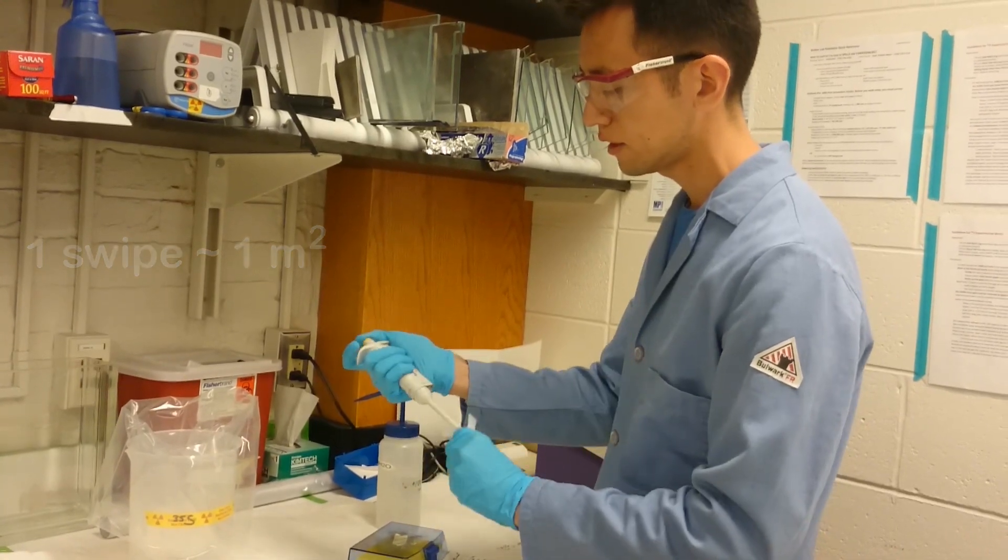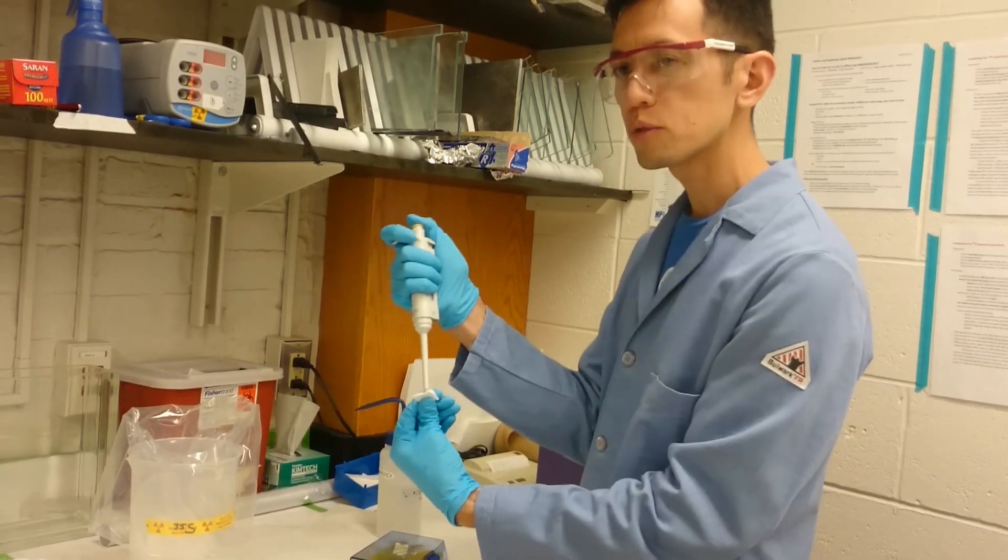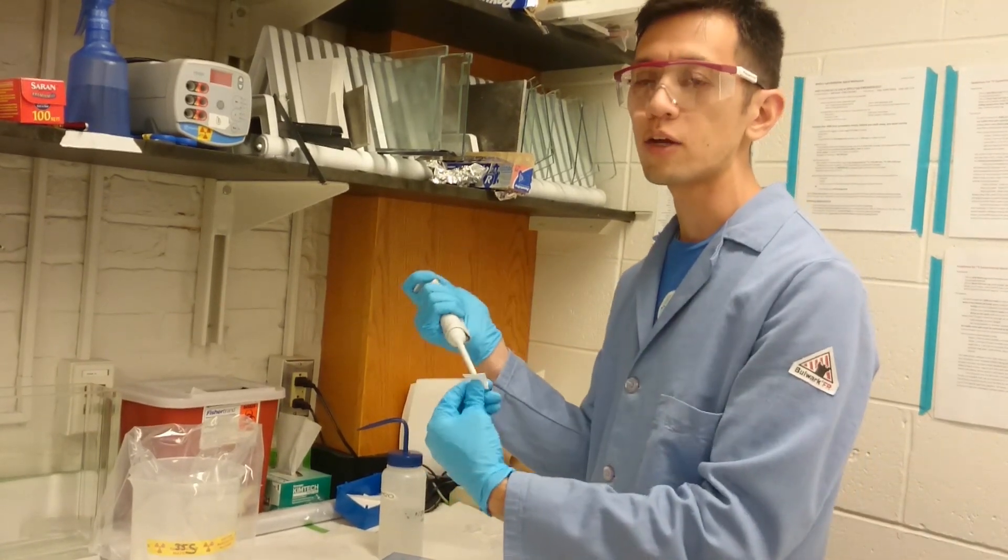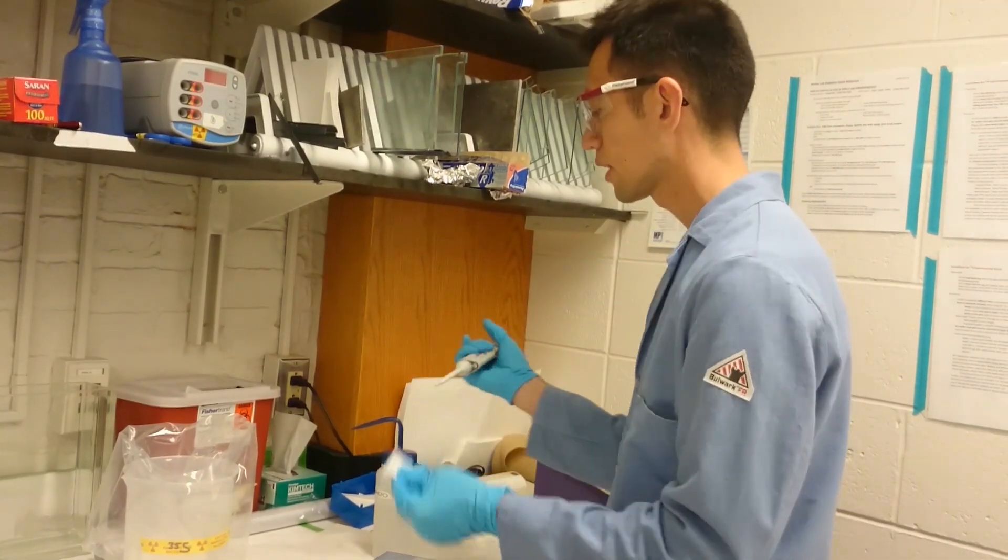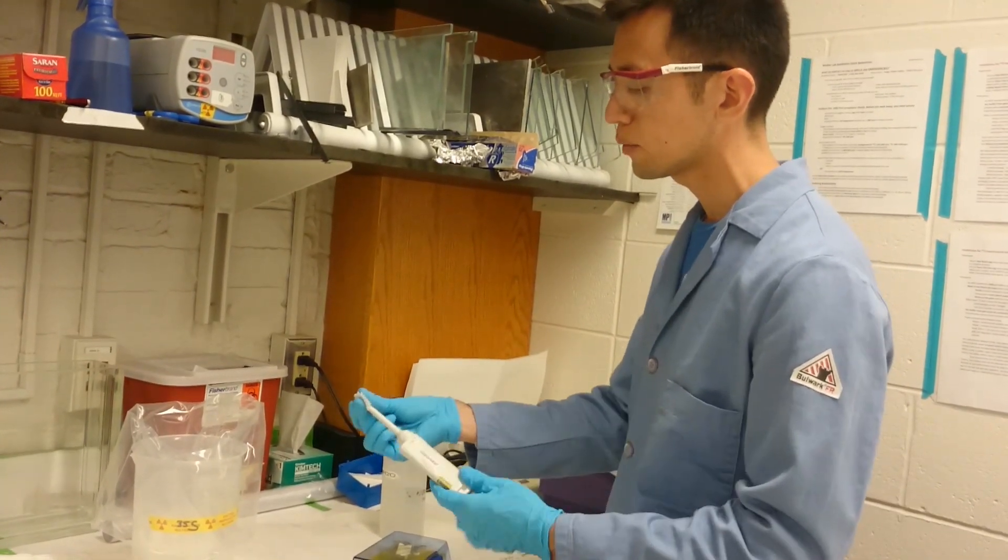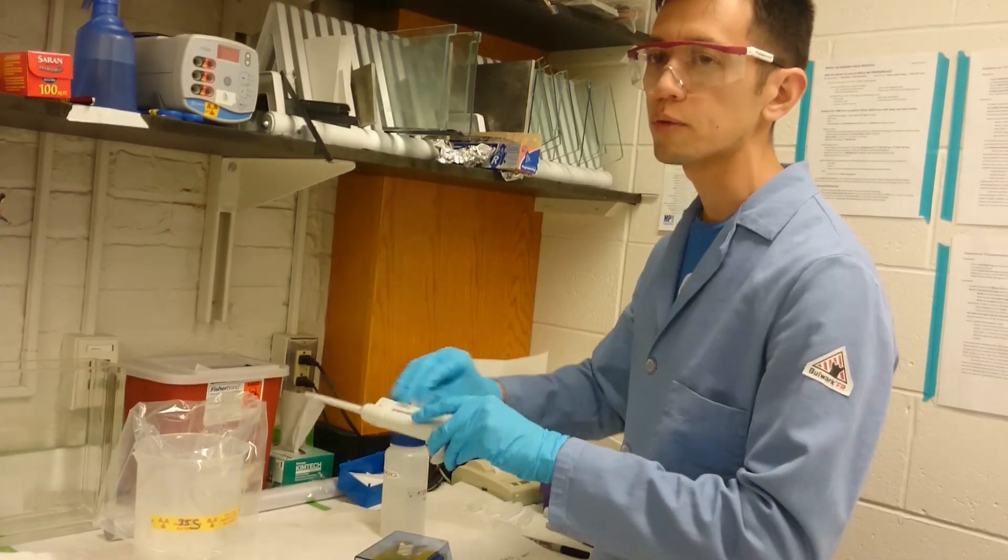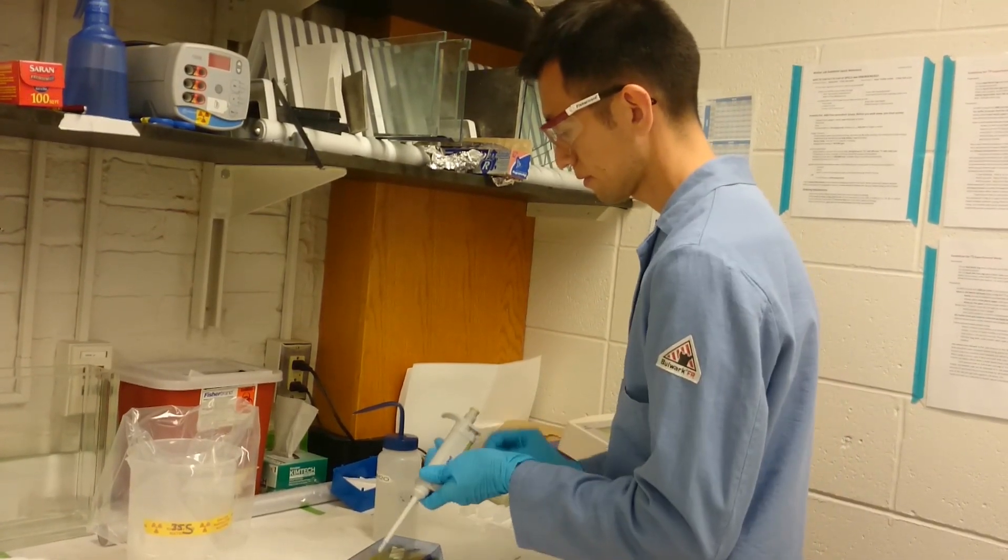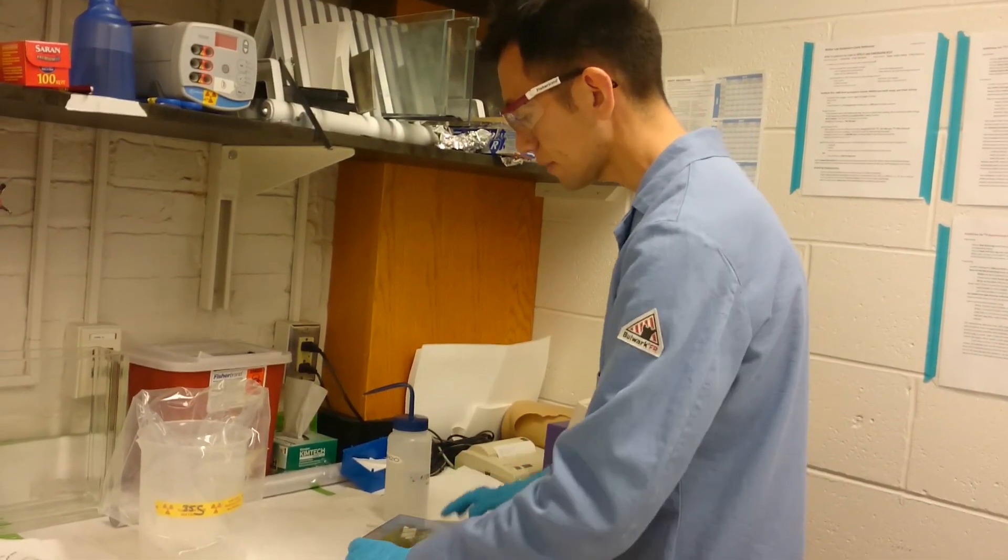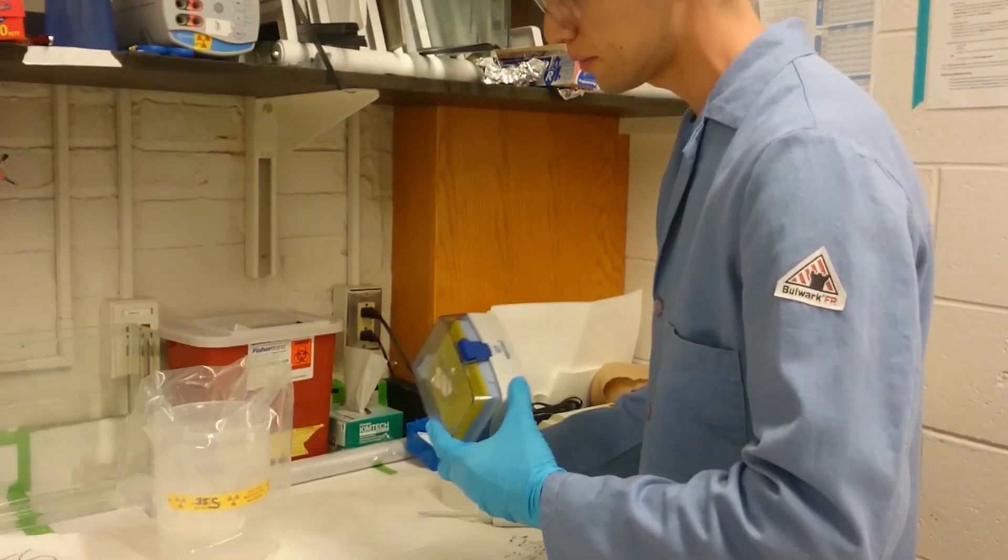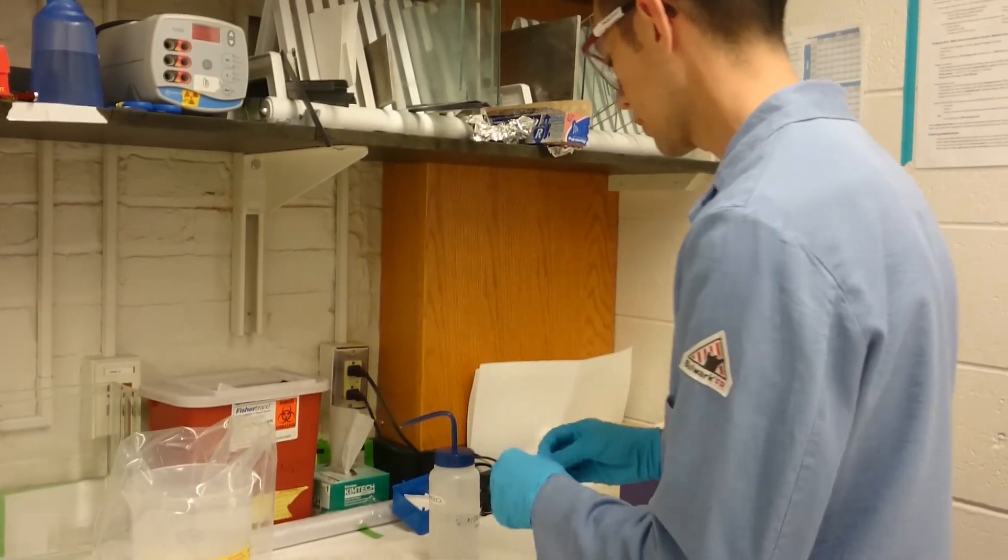It's also important to pump it up and down just in case there's anything inside the barrel. It'll get spit out onto the paper and then you'll know. So I did that onto the front side. Now I'm going to use the opposite side of the paper to swipe the rest of my pipettor. Put that down and also swipe the box - the top, the sides, and then the bottom.